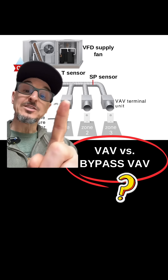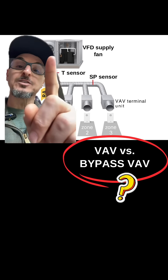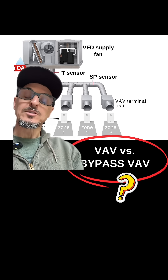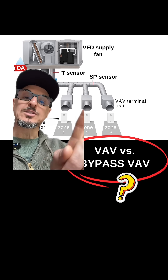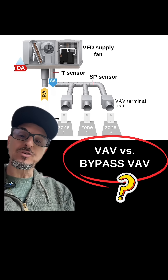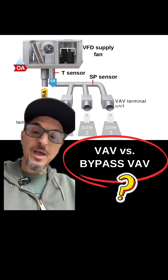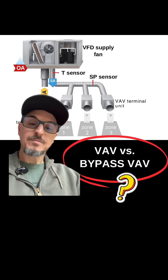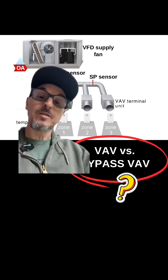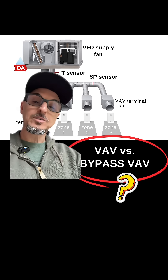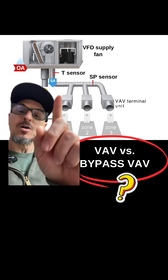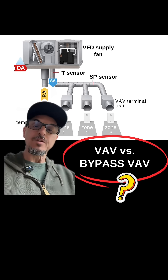One of the advantages of this system, other than the efficiency of the supply fan, is that you typically have electric heat in these boxes. So you do get some reheat at part load, and some tighter temperature control than you do in the bypass VAV system. You typically find bypass VAV in smaller, light commercial, even residential applications. And if you're going to have a VAV system in a larger commercial building, you will almost always have a true VAV system.